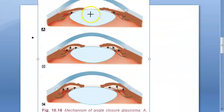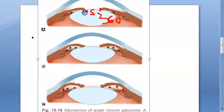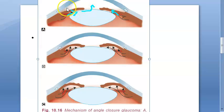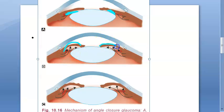Looking at this image: there is a posterior synechia stuck to the anterior capsule of the lens. It is posterior synechia because the iris is sticking posteriorly — if it sticks anteriorly it would adhere to the cornea. This is 360-degree annular ring adhesion. Now, the aqueous humor produced in the posterior chamber was earlier able to exit via the pupil to the anterior chamber, but because of this adhesion the aqueous humor is completely trapped. This trapped aqueous pushes the iris forward, causing the iris bombay — a bulging of the iris.